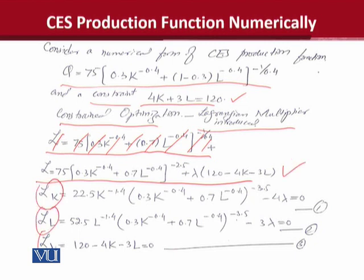And with that, we have done first order conditions, which are three, as there are three independent variables: labor, capital, and lambda.